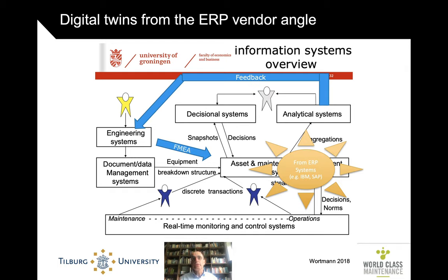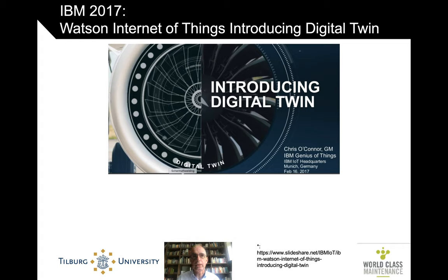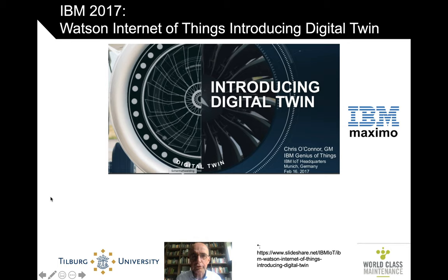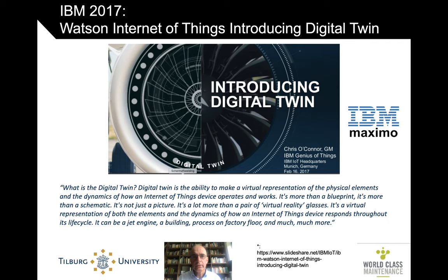Also the ERP vendors who used to own the space strike back with a digital twin angle towards their product offering. Take IBM, who supplies IBM Maximo — one of the biggest vendors of asset management IT systems. They also proudly present Watson, which is more the AI assistance layer around many of their systems. Chris O'Connor, IBM's 'genius of things,' introduced the notion of a digital twin. Again, the digital twin is the virtual representation of the physical elements and the dynamics of how an IoT device operates, and the idea that it should evolve over time.